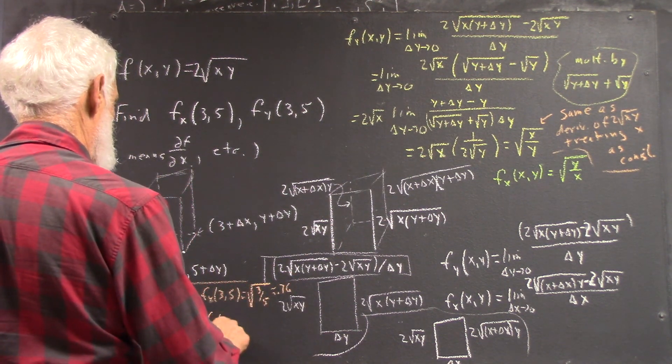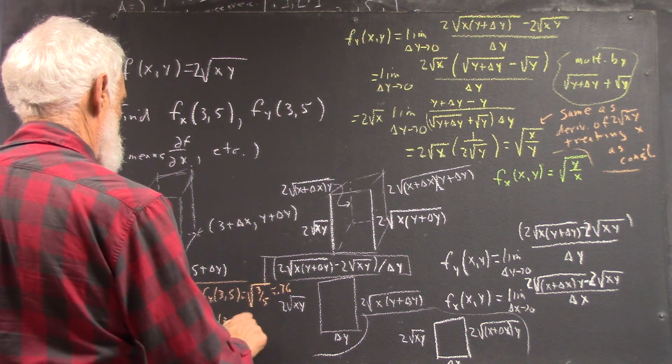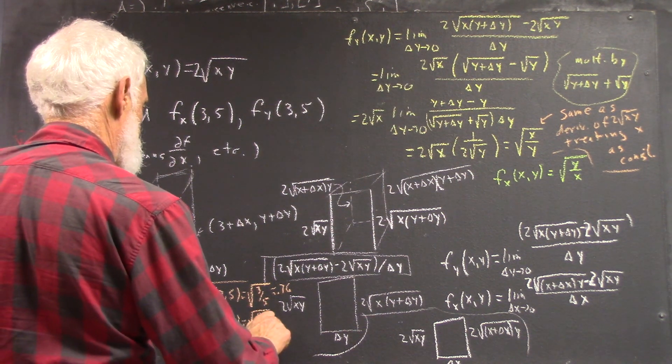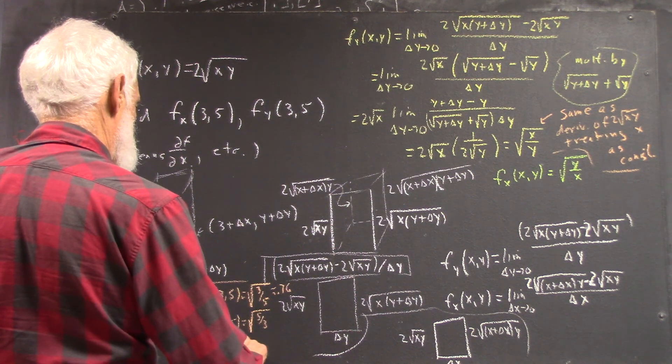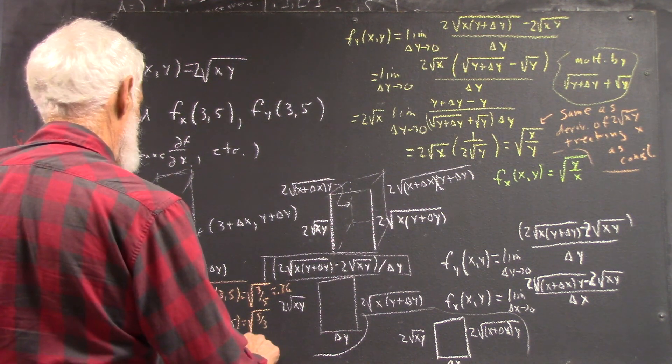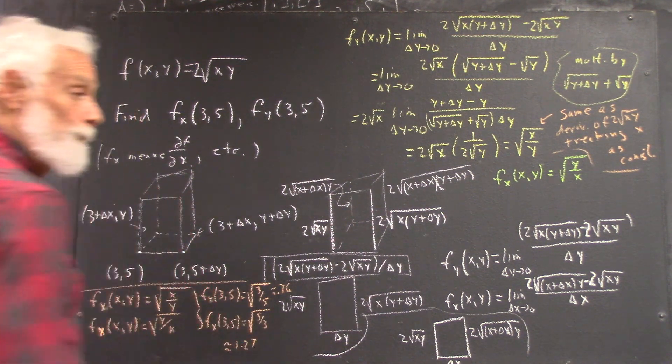fx of 3, 5 is the square root of 5 over 3, and that's approximately 1.27. So, okay? Make sense?